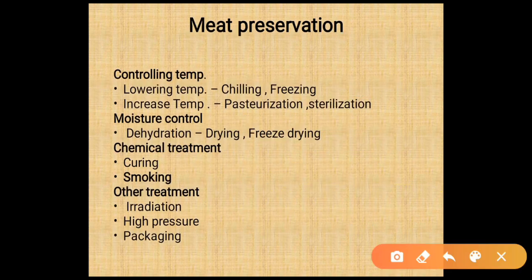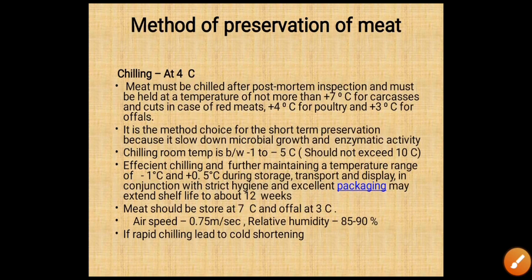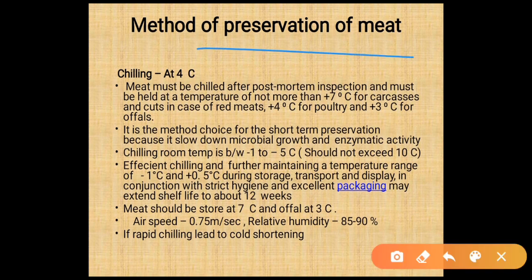Meat preservation methods: controlling temperature by chilling and freezing; increasing temperature by pasteurization and sterilization; moisture control by dehydration, drying, and freeze drying; chemical treatments by curing and smoking; other treatments including irradiation, high pressures, and packaging. For chilling, meat must be chilled after post-mortem inspection and held at no more than 7 degrees Celsius for carcasses, 4 degrees Celsius for poultry, and 3 degrees Celsius for offals.